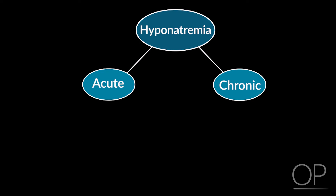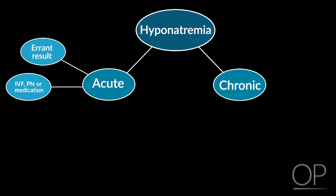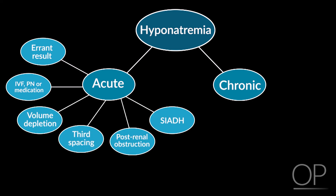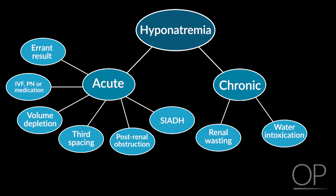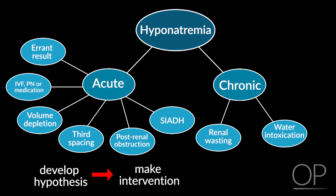A review of hyponatremia in the bone marrow transplant patient includes evaluating for acute and chronic issues. The acute issues include an errant result, IV fluid or parenteral nutrition or medications, volume depletion, third spacing, or SIADH. Chronic causes include renal wasting and water intoxication. Evaluation of hyponatremia in the bone marrow transplant patient should be performed rapidly and lead to an intervention and appropriate follow-up. After developing a hypothesis for why hyponatremia has occurred and making an intervention, it's appropriate to establish a monitoring plan for following up the sodium and a chemistry at some interval of time, like every six hours.